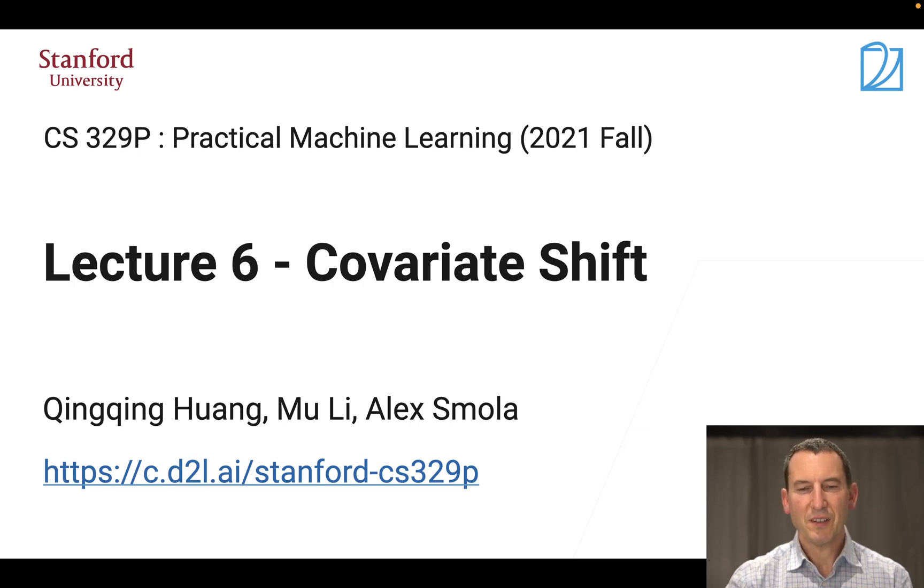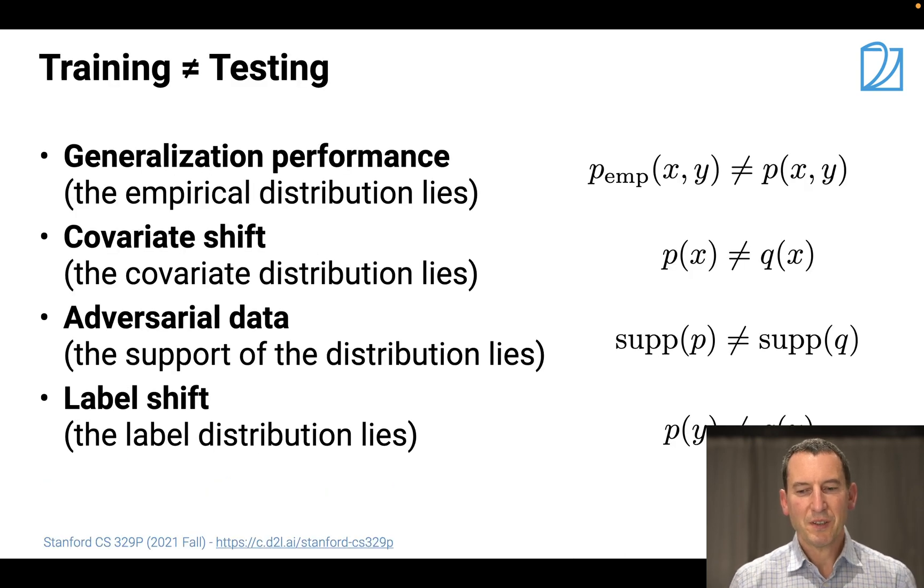Welcome to lecture six on covariate shift. Let's have a look at what covariate shift actually means. It basically deals with issues where training and test distribution are not quite the same.